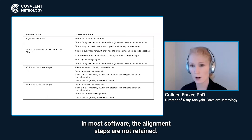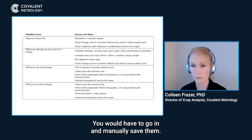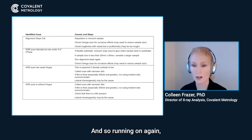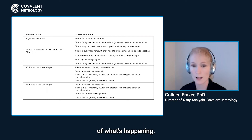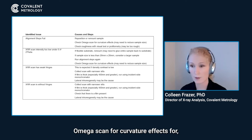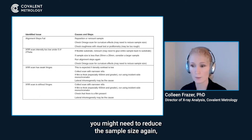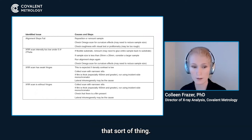In most software, the alignment steps are not retained — you would have to go in and manually save them. Running them again and saving the steps can give you a better idea of what's happening. You also want to check and scan for curvature effects, and you might need to reduce the sample size again.